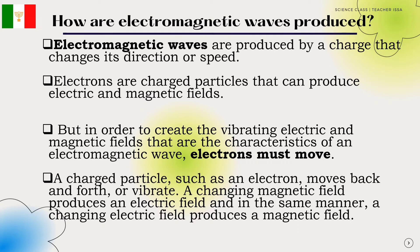Electromagnetic waves are produced by a charge that changes its direction or speed. Electrons are charged particles that can produce electric and magnetic fields. But in order to create the vibrating electric and magnetic fields that are the characteristics of an electromagnetic wave, electrons must move.